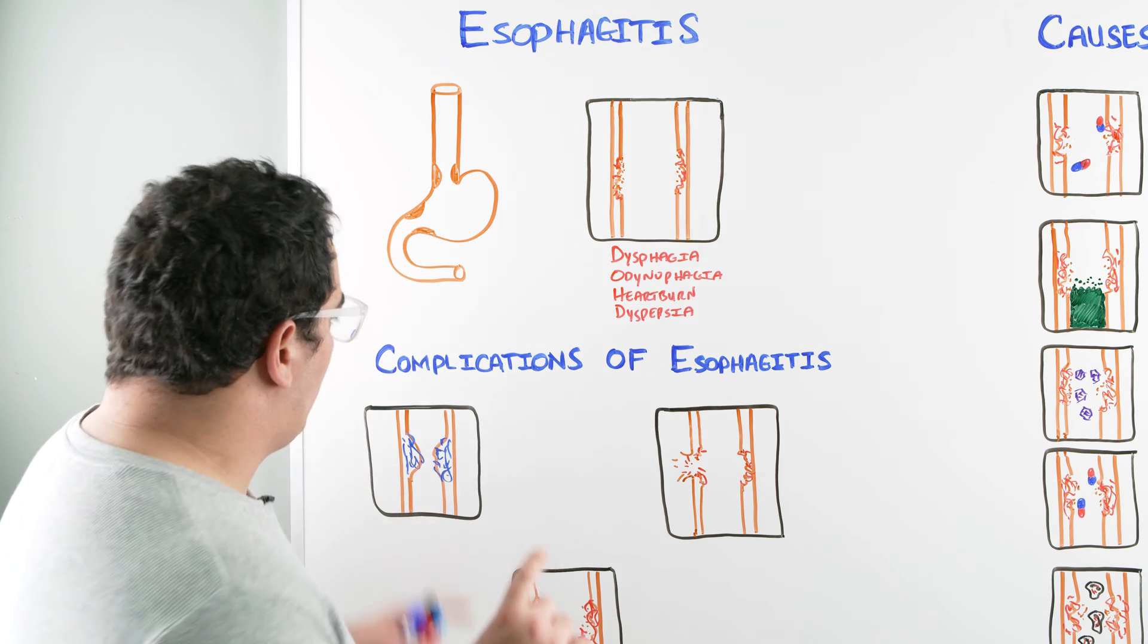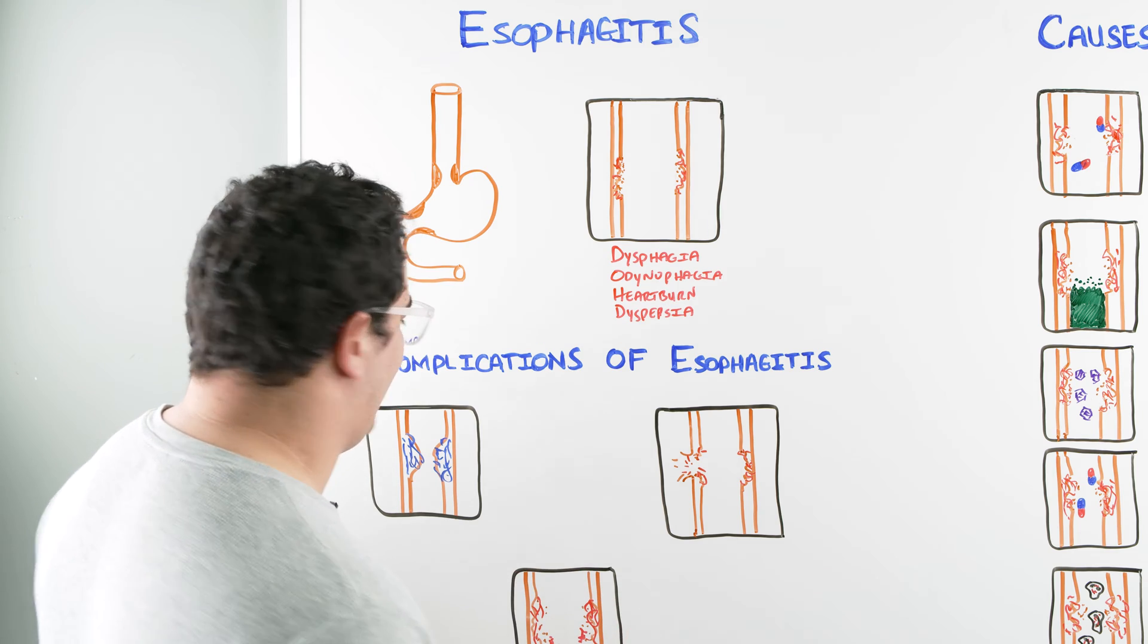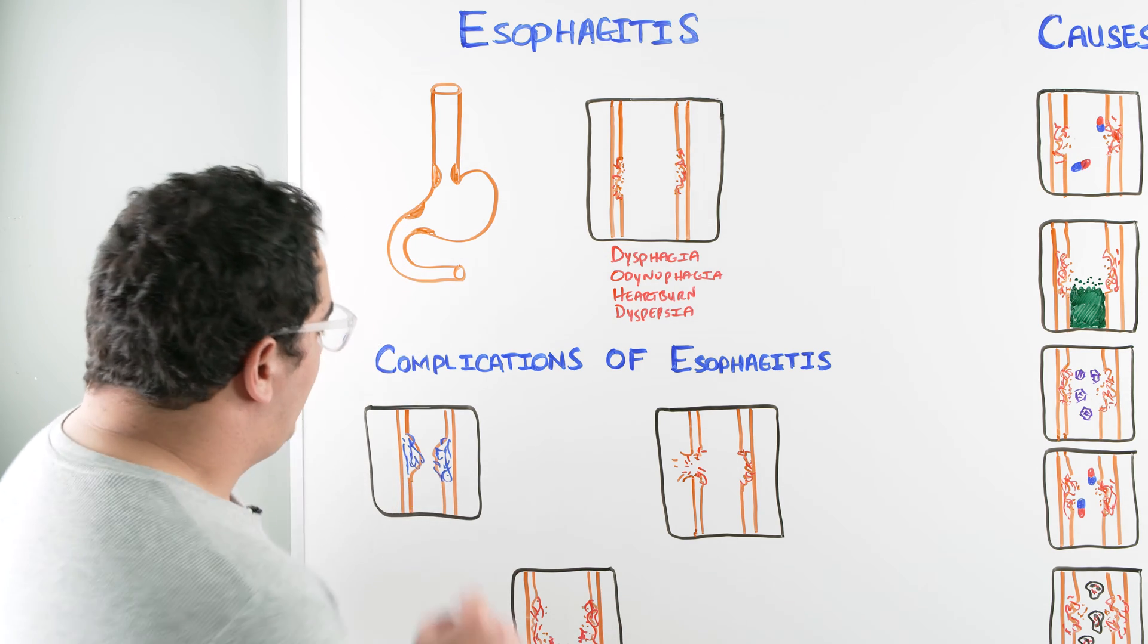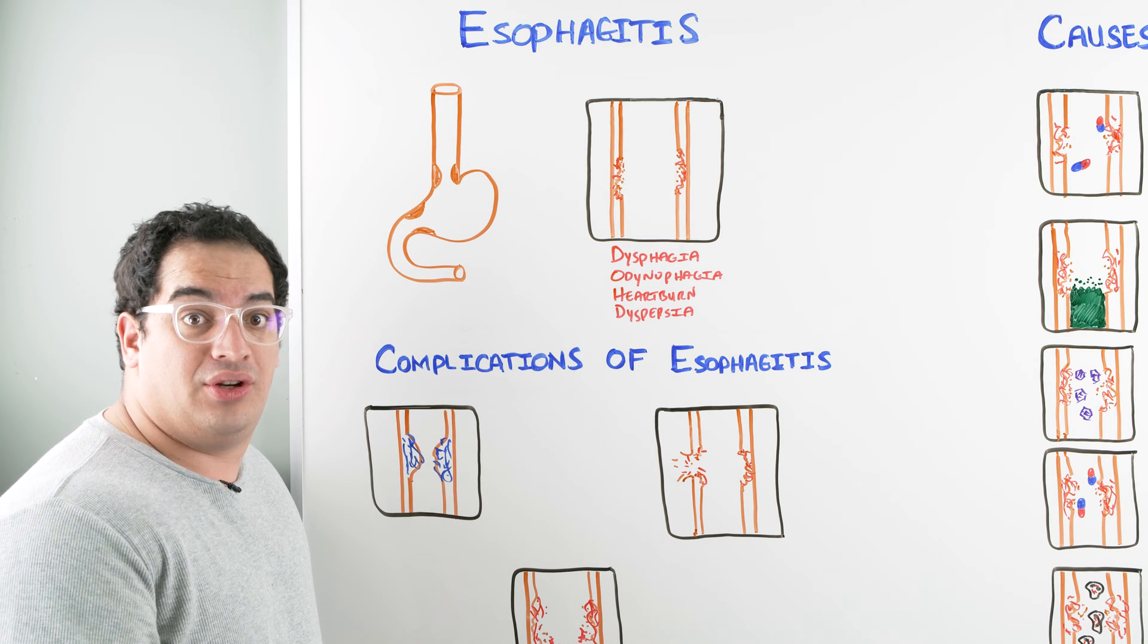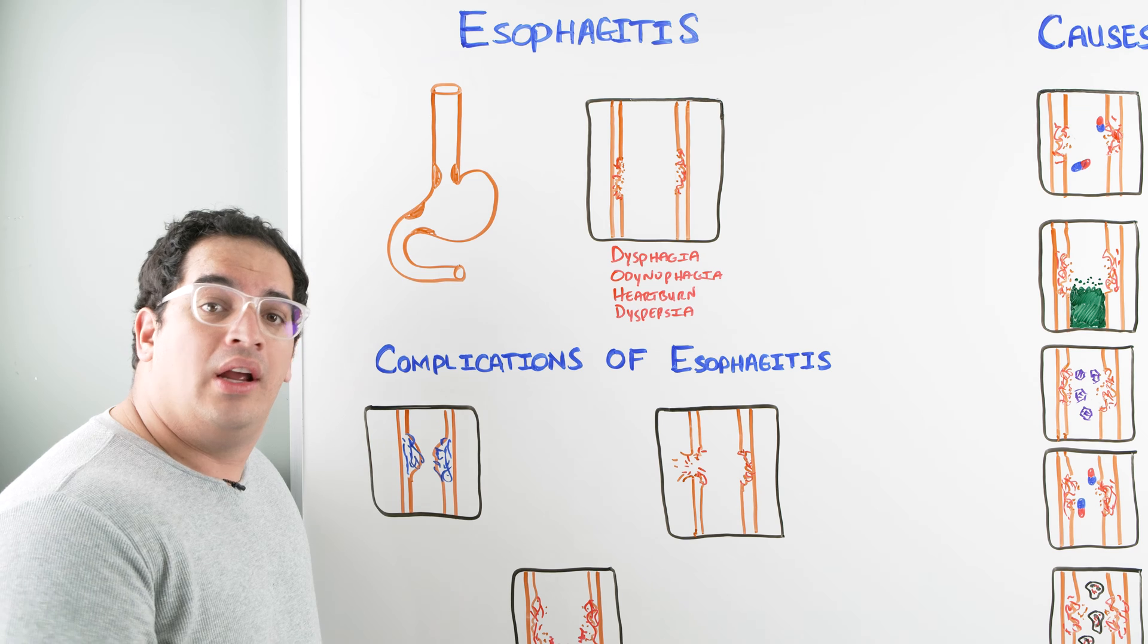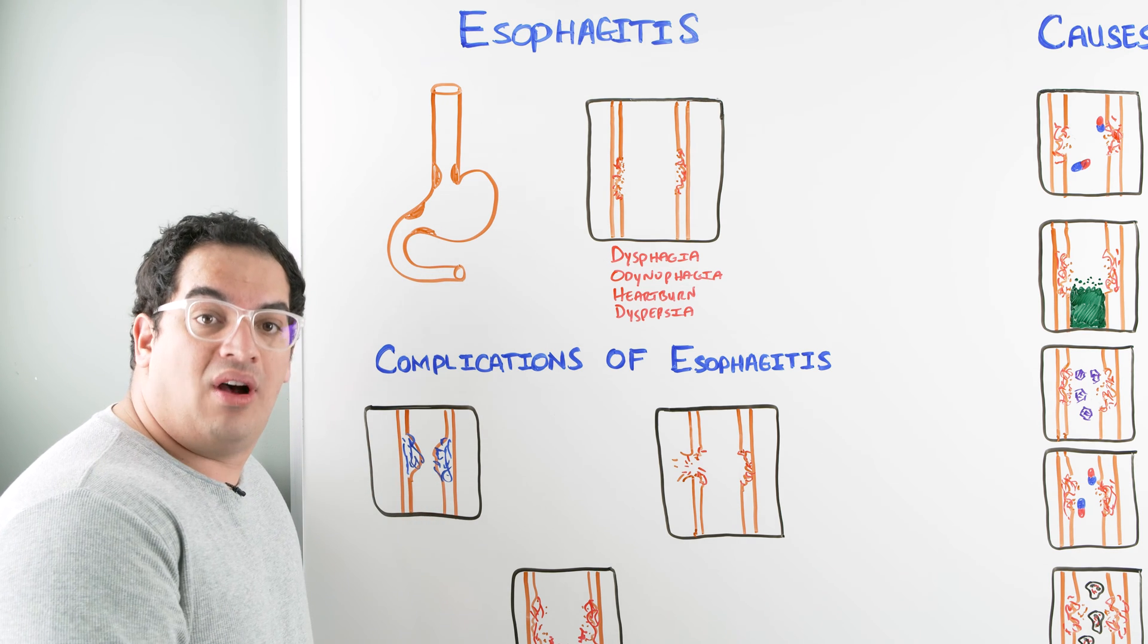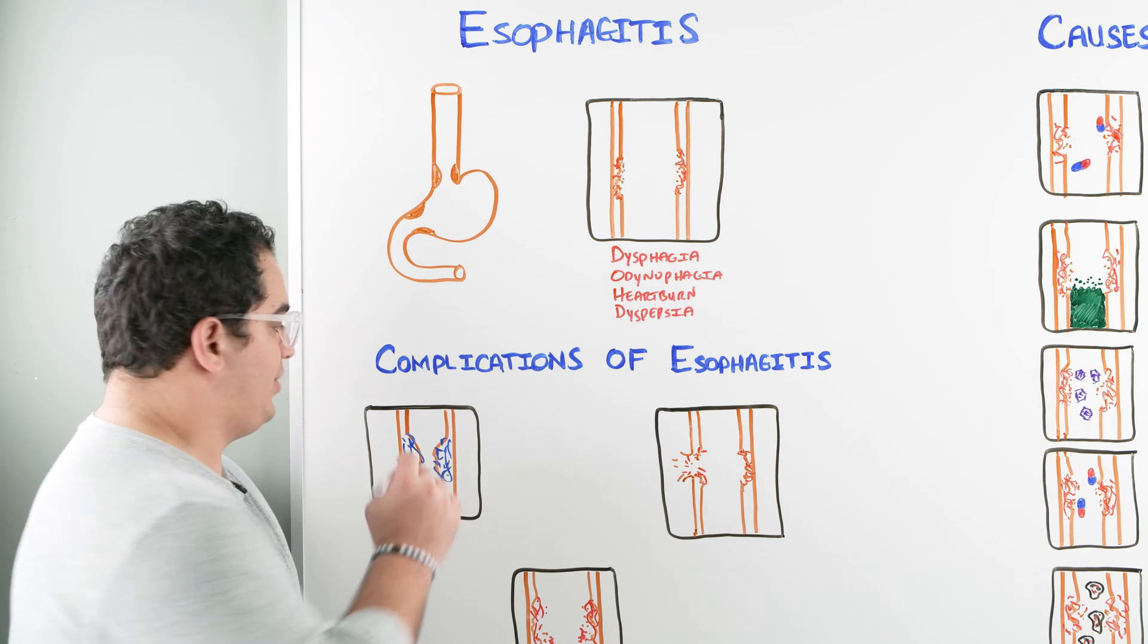Now the next thing to think about is: what are the complications associated with esophagitis? If you tear up the esophagus and inflame it, what are the problems? Well, with chronic inflammation, that tissue is going to have to heal. It'll undergo fibrosis and eventually you'll narrow this esophageal lumen and lead to strictures.